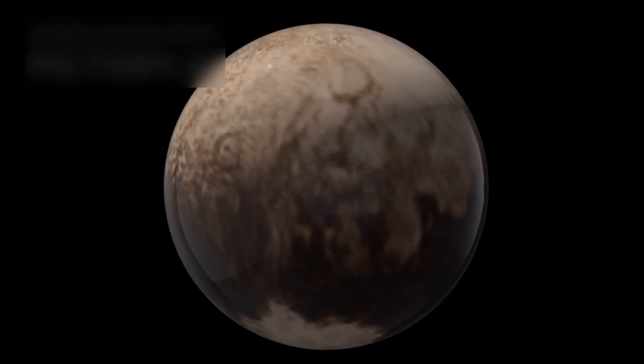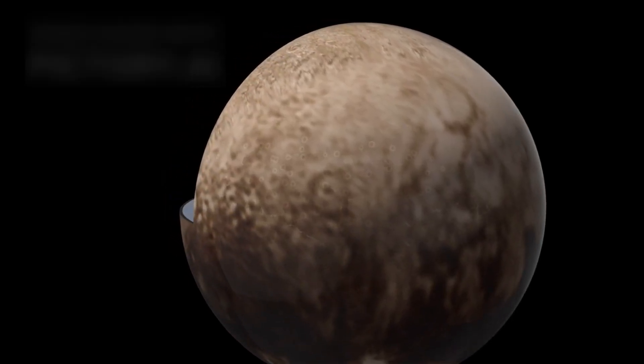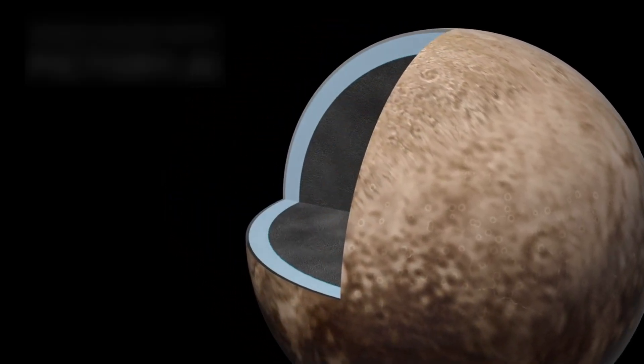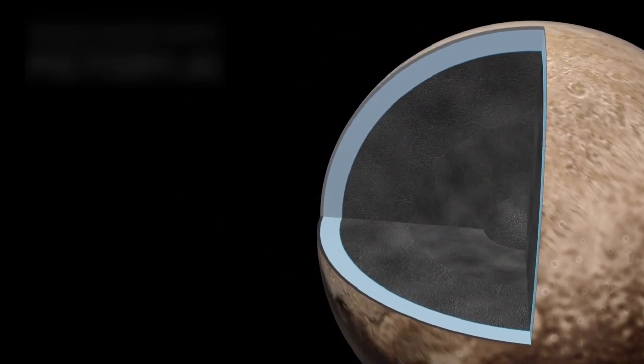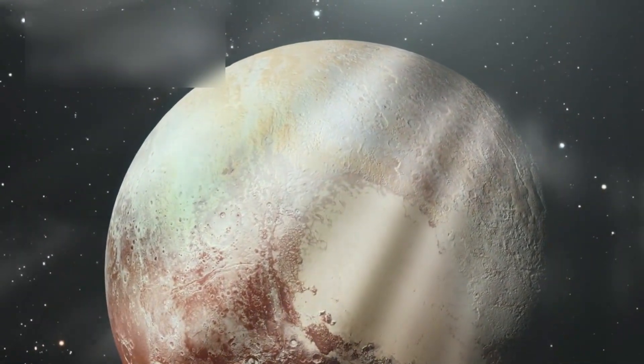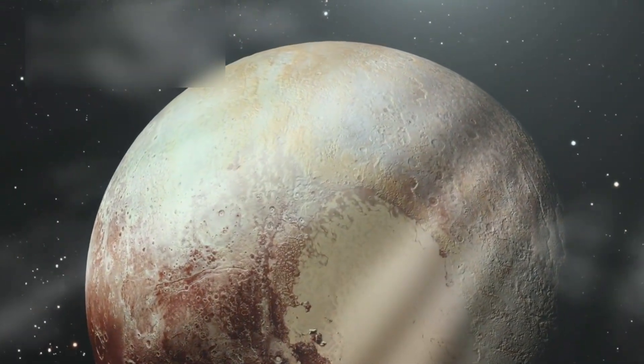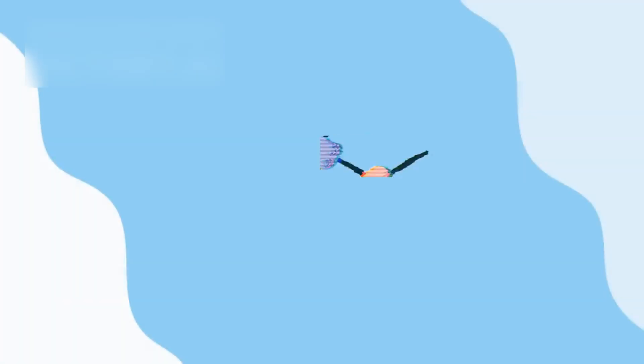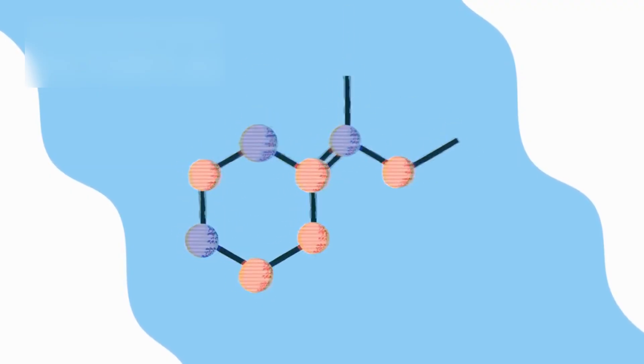The dwarf planet has a thin but complex atmosphere, mostly made of nitrogen with traces of carbon monoxide and methane. This atmosphere gives Pluto a reddish glow caused by organic molecules called tholenes. Tholenes form when sunlight triggers chemical reactions in Pluto's atmosphere. These molecules might be the building blocks for more complex chemistry, hinting at the origins of life in harsh environments.